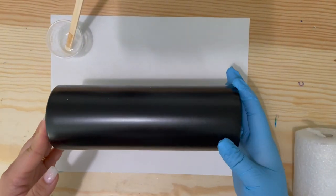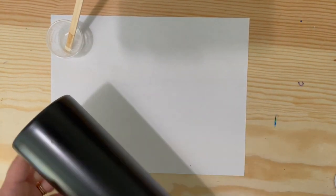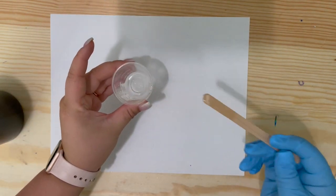For today's tumbler, we are using a 20-ounce Skinny Straight from Maker Flow Crafts and I spray painted this black. So if you are going to be making a Northern Lights tumbler, make sure to paint your tumbler black beforehand.